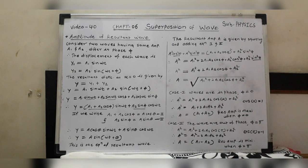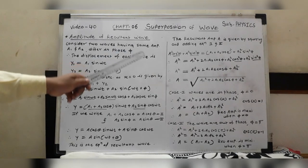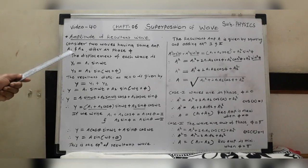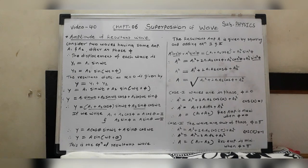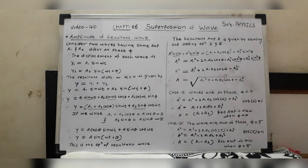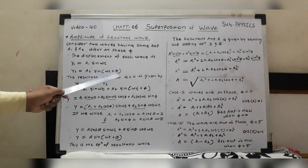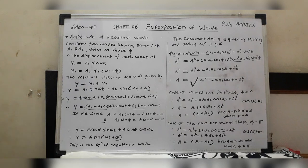For that purpose, consider two waves having the same frequency and slightly different amplitudes A1 and A2, and these two waves differ in phase by π. Then the two displacements are given by: y1 = A1 sin(ωt), y2 = A2 sin(ωt + π). Frequencies are the same and the phase change is π.